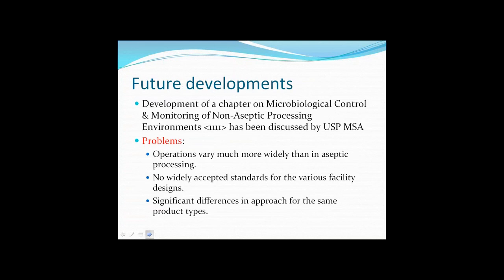In terms of future developments, it is notable that the USP may be considering a non-steriles chapter on microbial control of non-sterile processing environments, to be developed in tandem with USP 1116. Such a chapter would be useful for defining operational controls over non-sterile process areas and offering advice about monitoring times and risk-based location selection. The difficulties are that the risks for non-steriles vary much more widely than in aseptic processing, there are no clear standards in relation to facility design, and there are many differences between manufacturers.